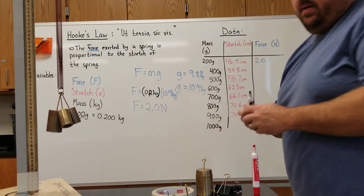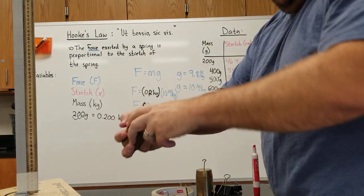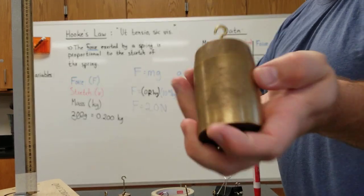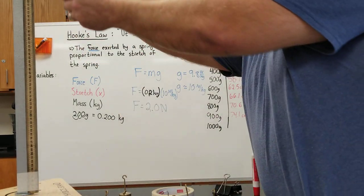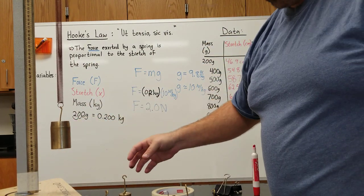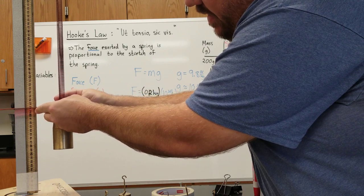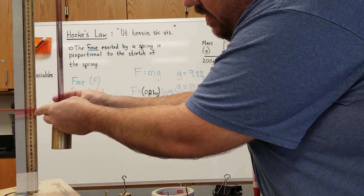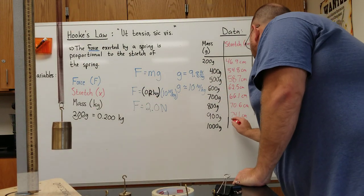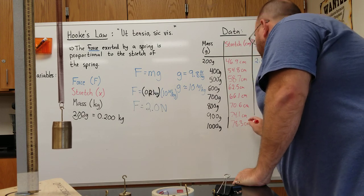Now let's do 1,000 grams. I'm actually going to take all of these things off and hang a big old giant 1,000 gram mass on there. See how far that big boy stretches it. So with 1,000 grams, which would be 1 kilogram, that looks like 78.3 centimeters.